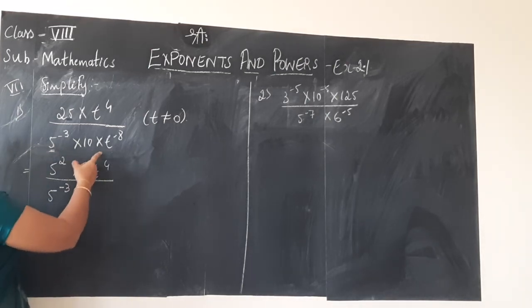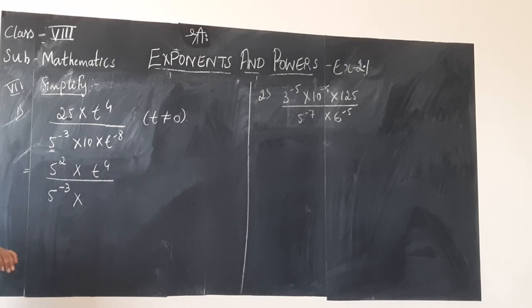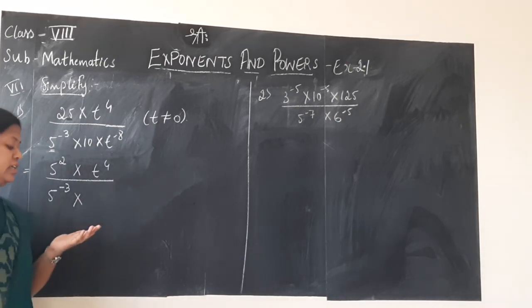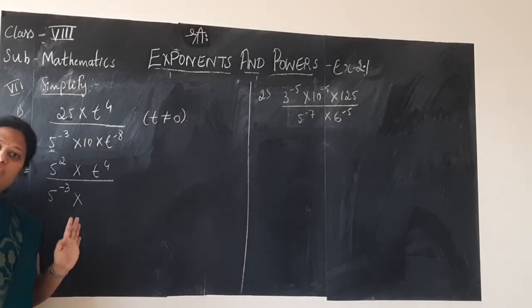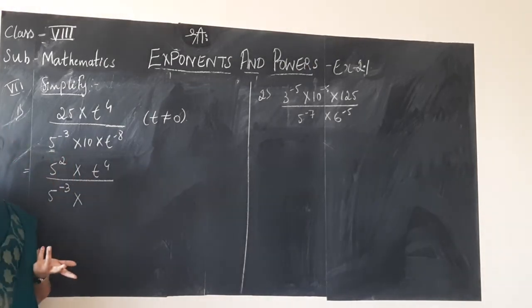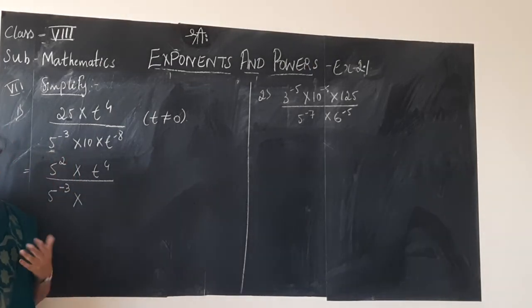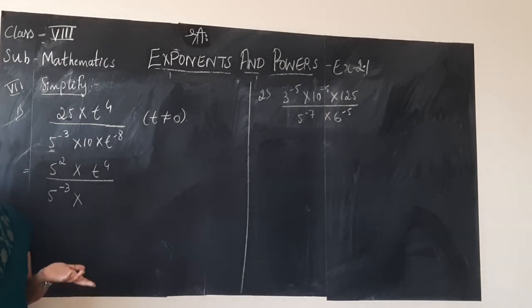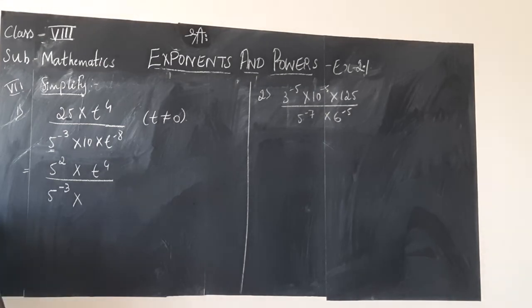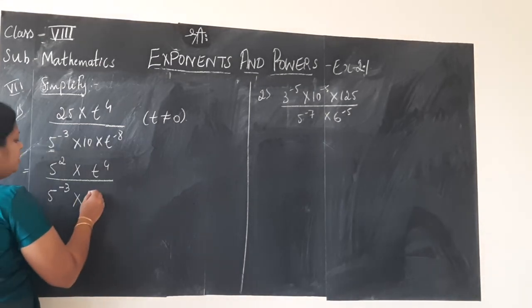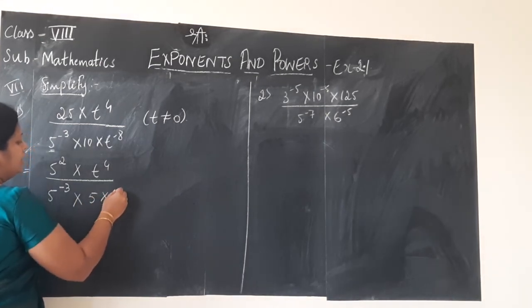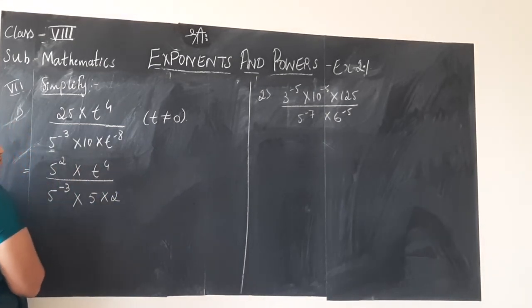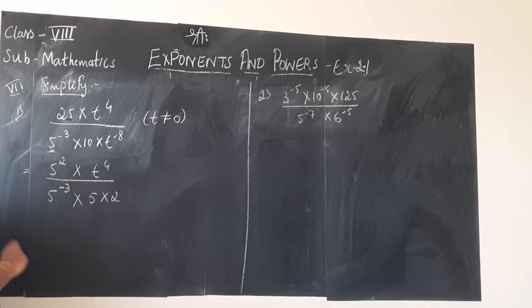Now I have to simplify the number 10. 10 can be written as 10 into 1, but that is of no use — we will have the bigger number 10 again. The next possibility is 5 into 2, or 2 into 5. So whichever you want, you can write. I will write it as 5 into 2.